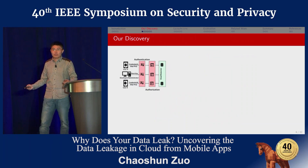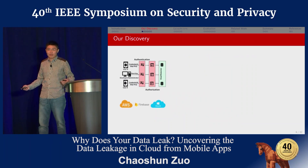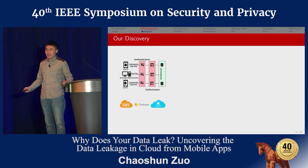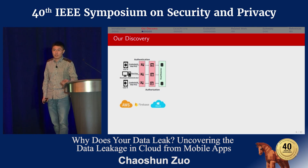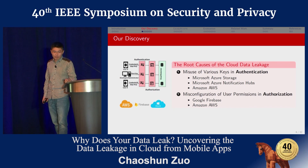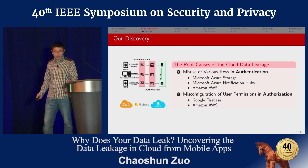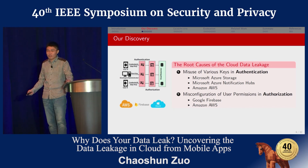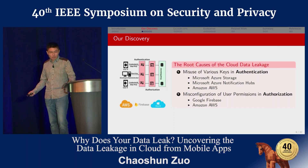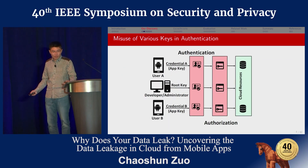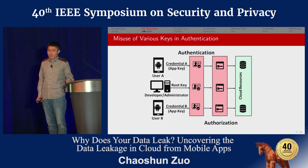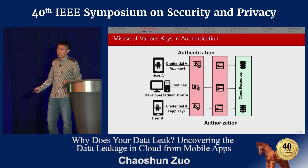In this study we focus on three mainstream cloud providers: Amazon AWS, Google Firebase, and Microsoft Azure. We have discovered two root causes of data leakage. The first is misuse of various keys in authentication, discovered in Microsoft Azure and Amazon AWS. The second is misconfiguration of user permissions in authorization, discovered in Google Firebase and Amazon AWS. Let me explain them. The first root cause is key misuse — recall there are two types of keys: app key and root key.